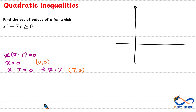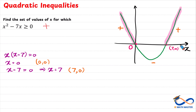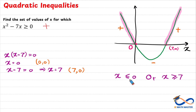If we sketch the graph, we plot the roots at the origin 0, 0 and at 7, 0. The graph opens upward. Our inequality must be greater than or equal to 0 — positive or zero. The positive parts are to the left of 0 and to the right of 7. So the solution is x less than or equal to 0, or x greater than or equal to 7. Here 0 and 7 are included since we have the 'equal to' condition.